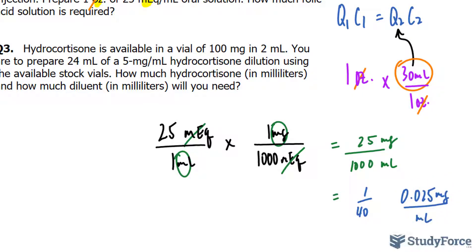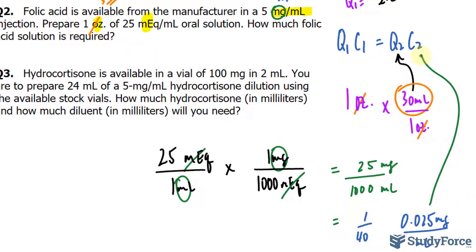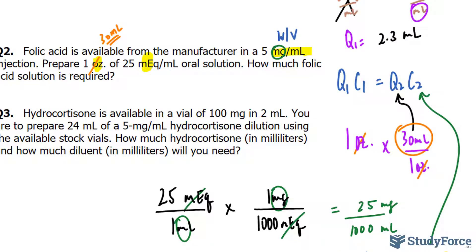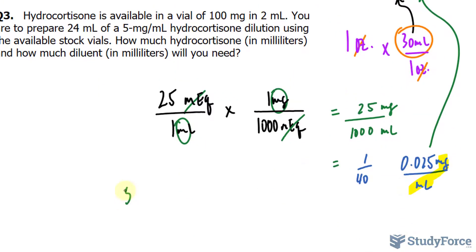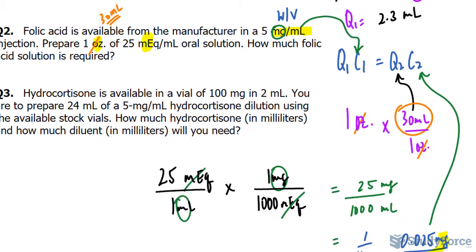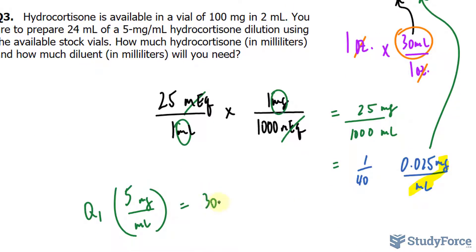This value will be substituted in for C2. And notice that the units match the manufacturer, so I'll plug that value as well in for C1. Let's see what we get. 5 milligrams per milliliter, that's C1. Q1 is unknown, that's what we're looking for. 30 milliliters gets placed in for Q2. And for C2 we just discovered is 0.025 milligrams per milliliter.